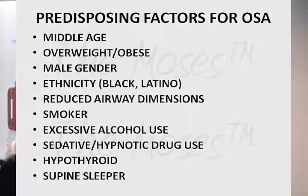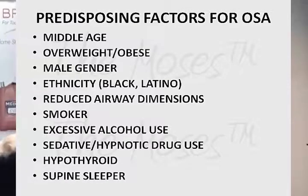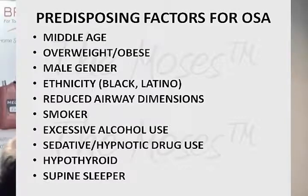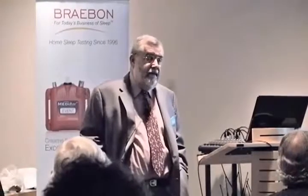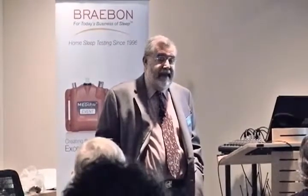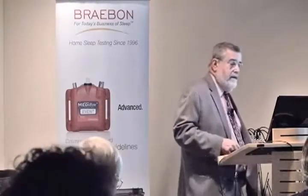Predisposing factors: middle age, overweight or obese, male gender, ethnicity — blacks and Latinos have higher rates, while Far East Asians don't have a higher rate but suffer more severely when they do have it. They have reduced airway dimensions, many smoke, many use excessive alcohol, and many are using hypnotics and sedatives. Ask patients: I can't sleep, so I take Ambien. Well, Ambien is not a respiratory depressant, but many other drugs they're on are respiratory depressors.